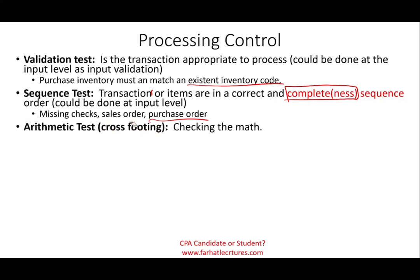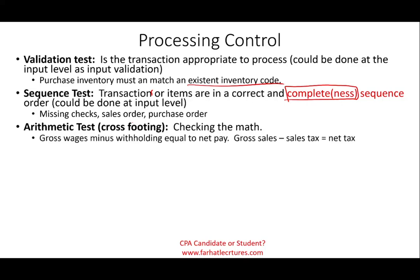Processing should also have what's called an arithmetic test or cross-footing — simply put, checking the math. Any simple software should do that as long as it's programmed properly. For example, it should take gross wages minus withholding to give you net pay, or gross sales minus the sales tax we need to pay to the government should give us net sales — sales net of tax.